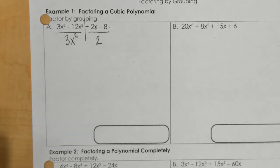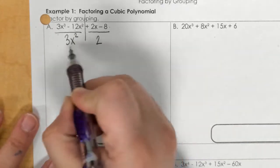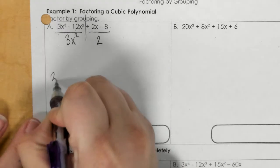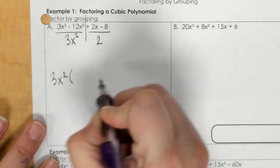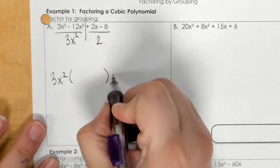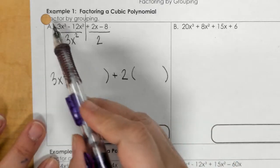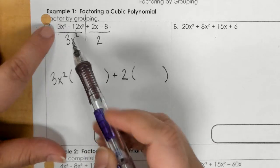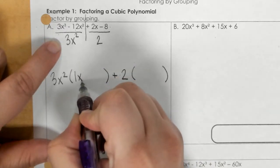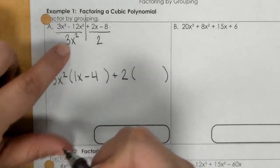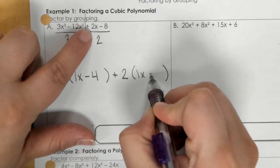So now, once I know these two, I bring these down with parentheses, then I have plus the two with parentheses. So, I need to divide, subtract, divide, subtract, so 1x minus 4, then I have 1x minus 4.